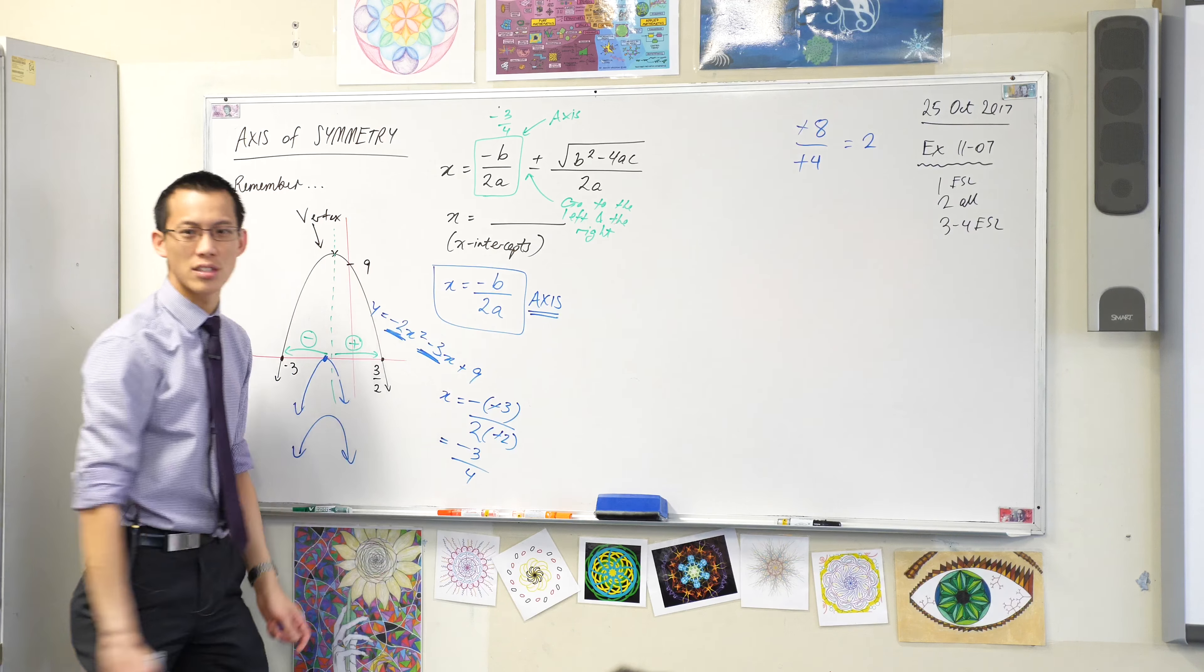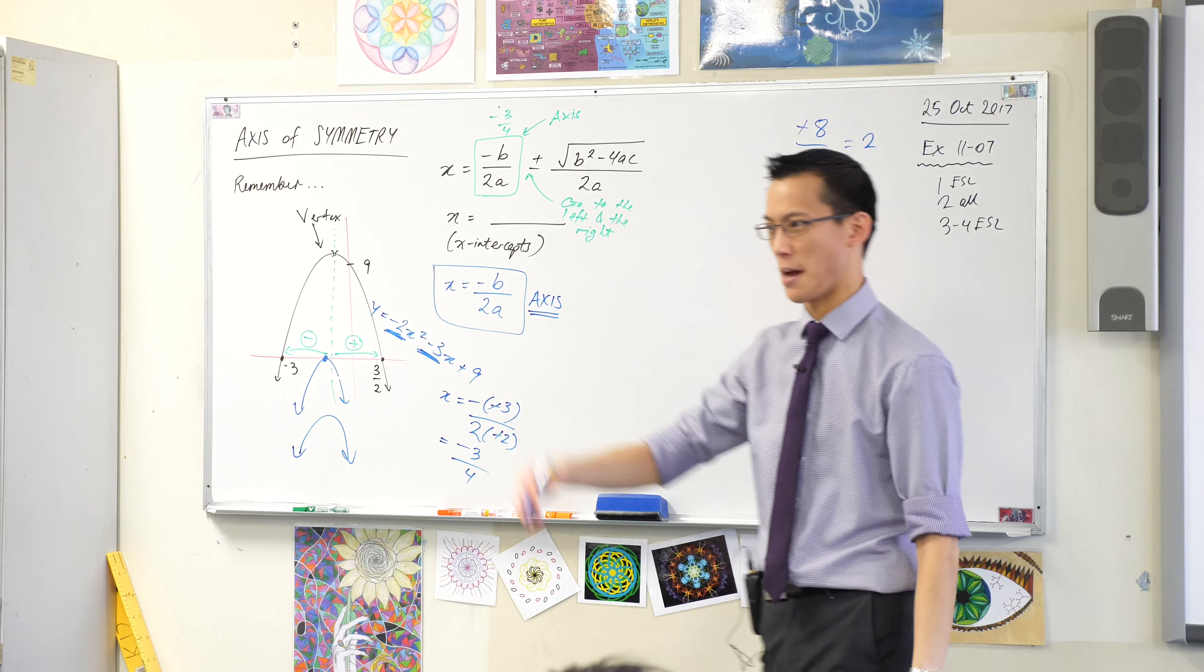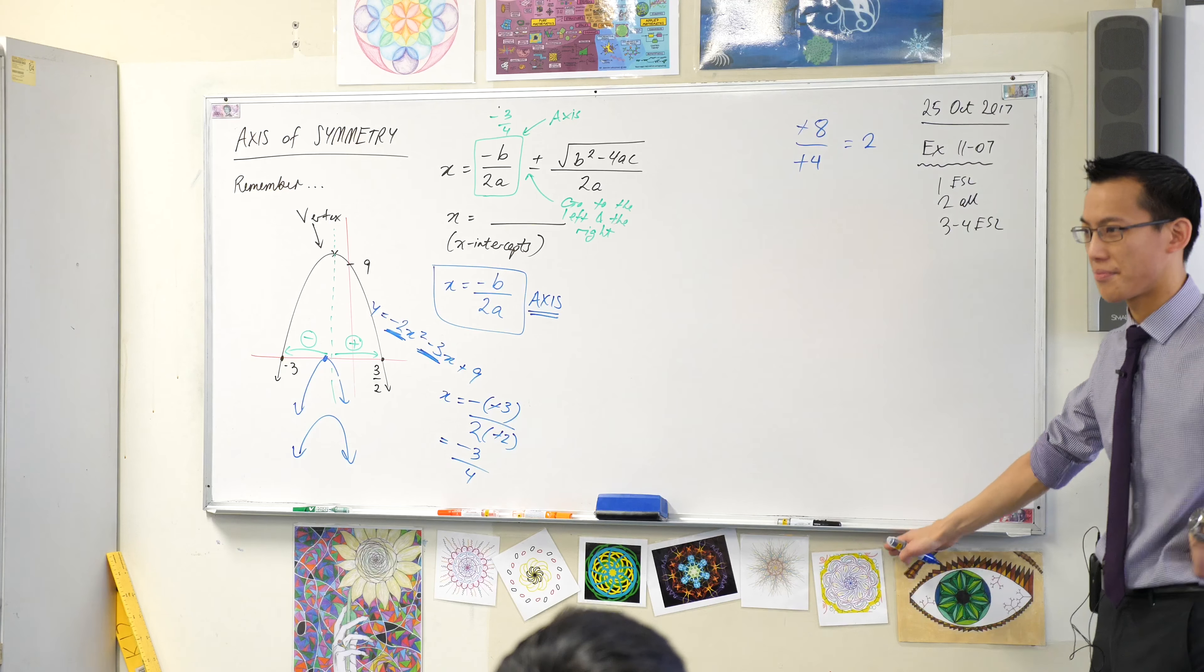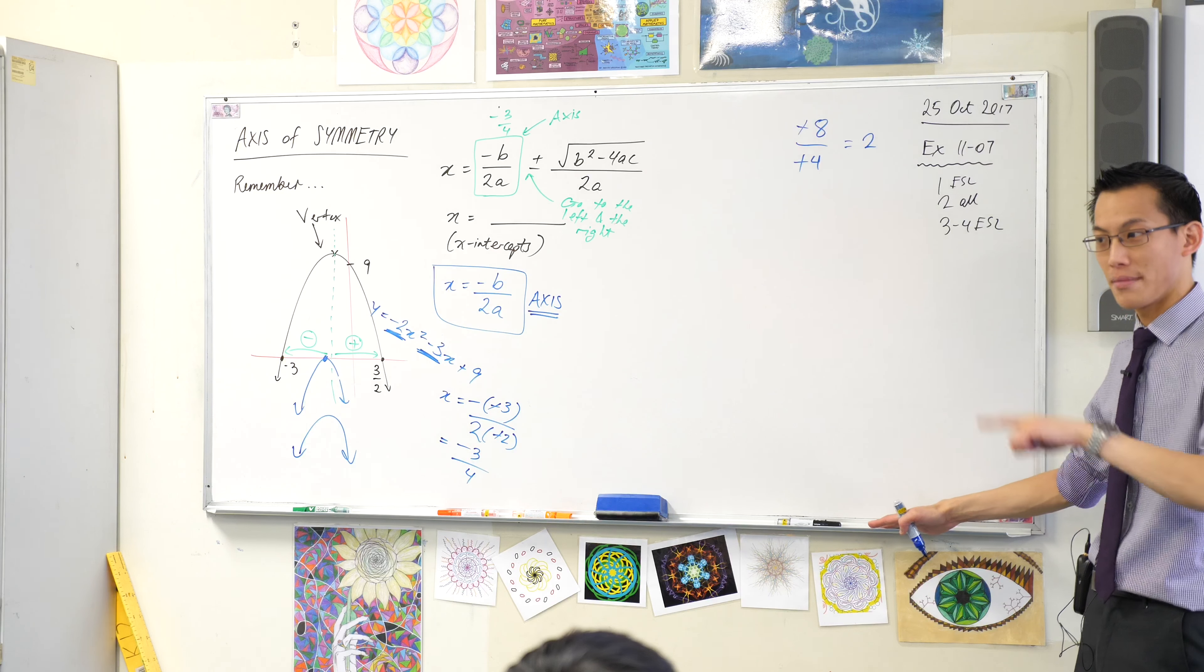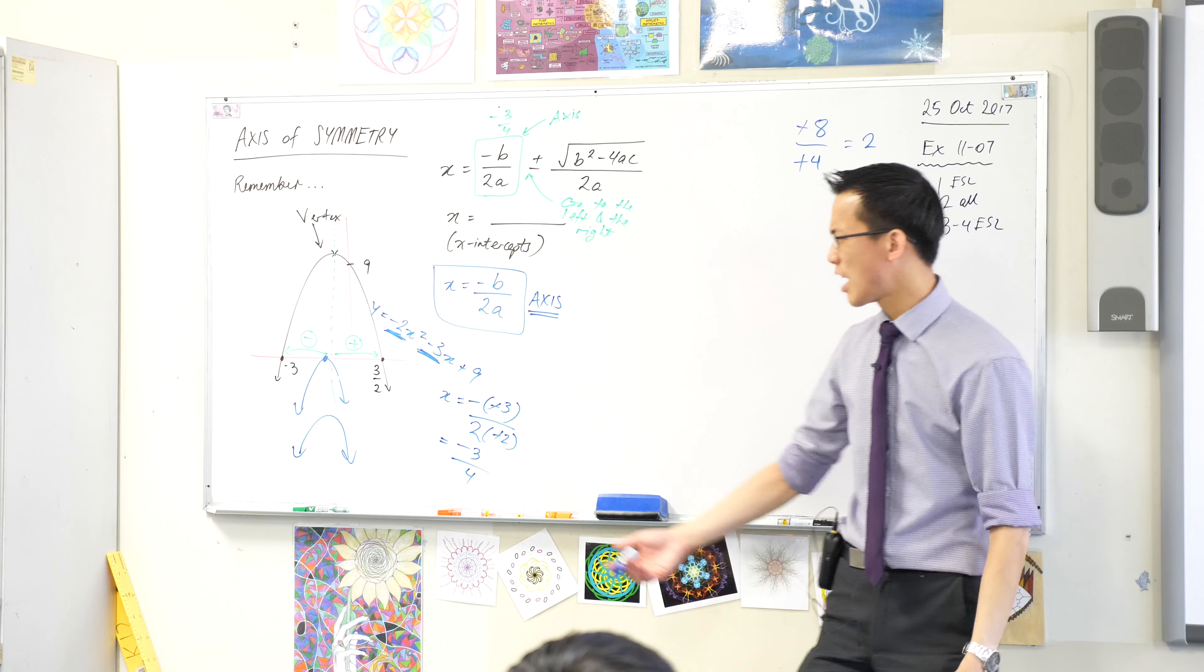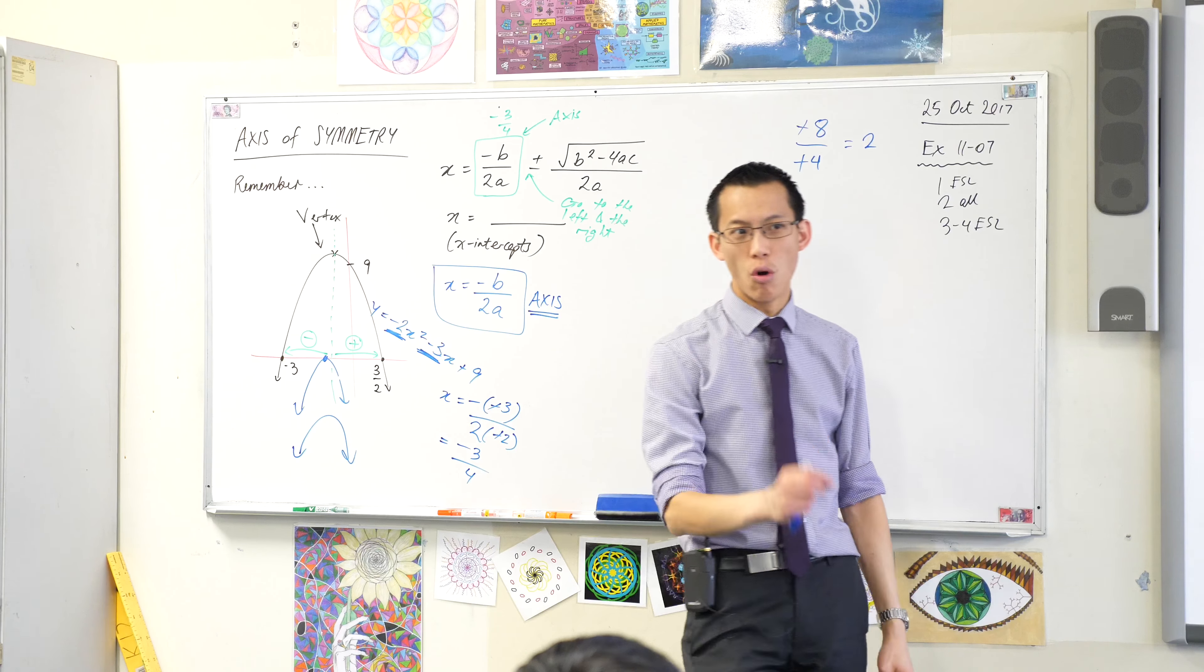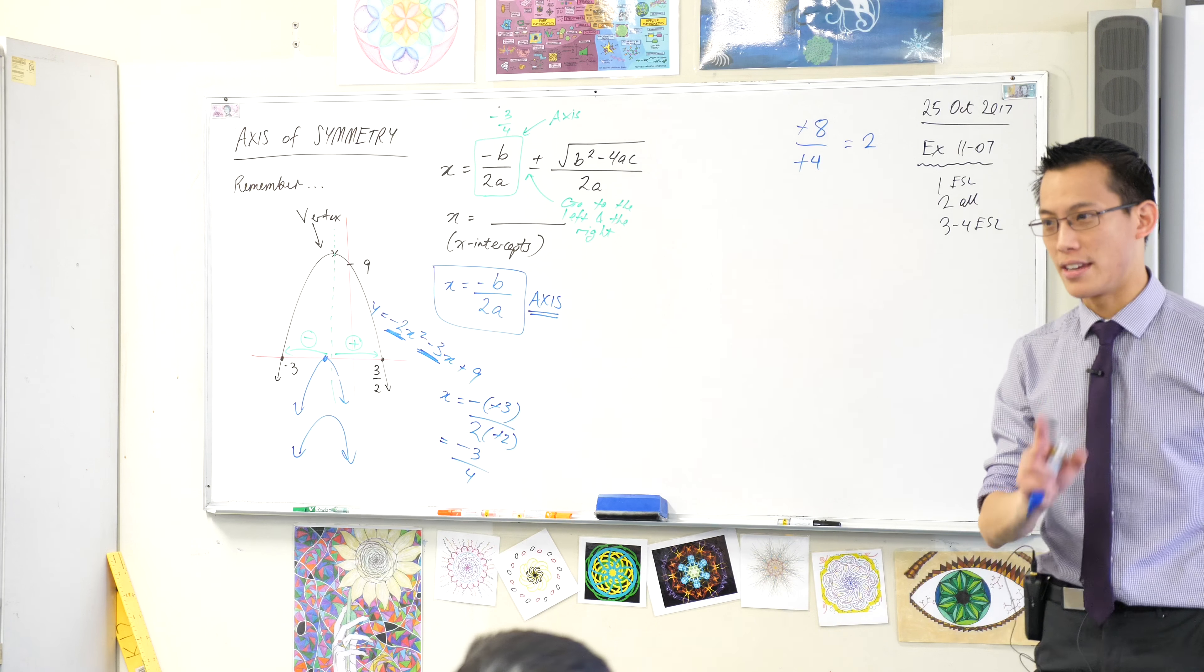You always have an axis of symmetry on a parabola because a parabola is always symmetrical. Is there ever a chance that there's never a y? No. So I asked you yesterday, how can it be that sometimes you get no x-intercepts, sometimes you get one, sometimes you get two, but you always, always, always get a y-intercept. Here's why.